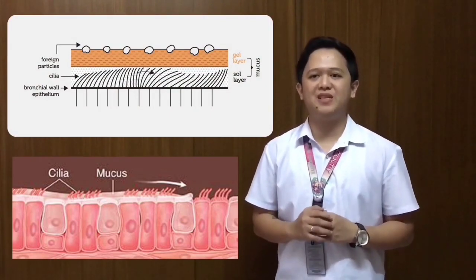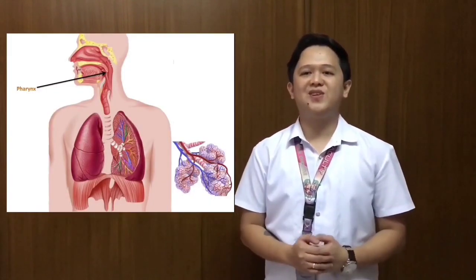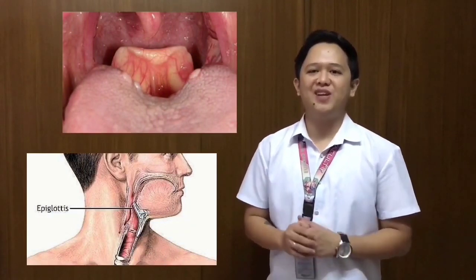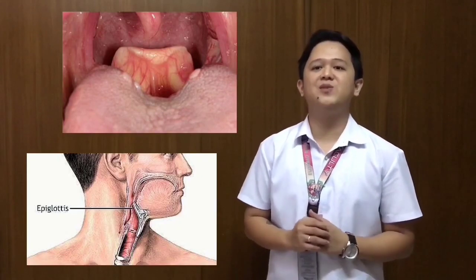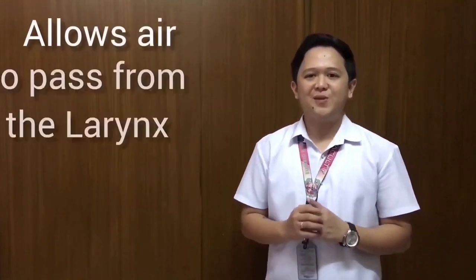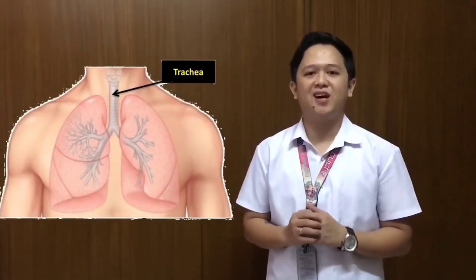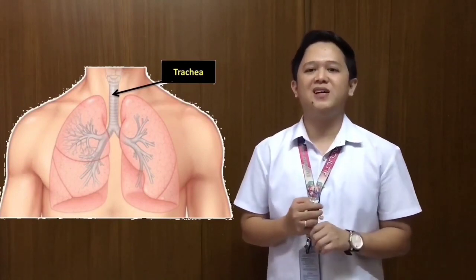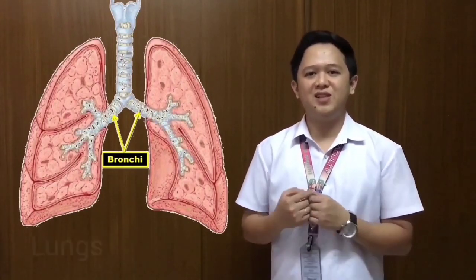Mucous membranes beneath the cilia in the nasal passages warm and moisten the air while trapping foreign materials. Filtered air then passes through the upper throat called the pharynx. A flap called the epiglottis, which covers the opening of the larynx, prevents food particles from entering the respiratory tubes. The epiglottis allows air to pass from the larynx to a long tube in the chest cavity called the trachea or the windpipe. The trachea branches out into two large tubes called bronchi, the singular is bronchus, which lead to the lungs.